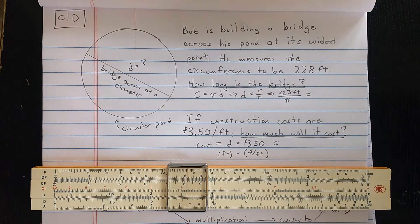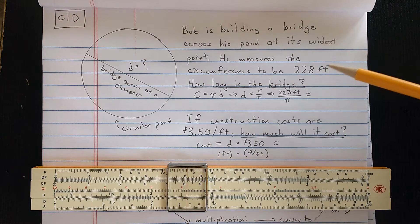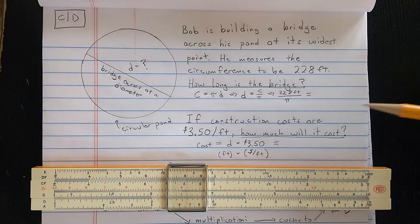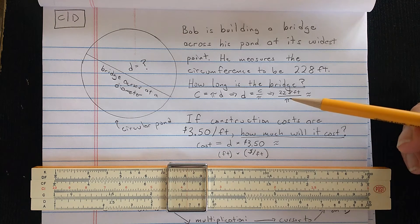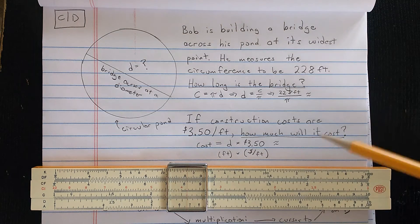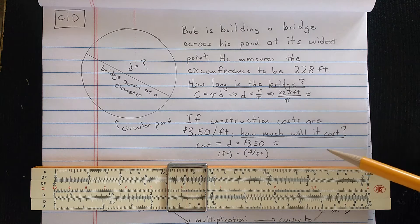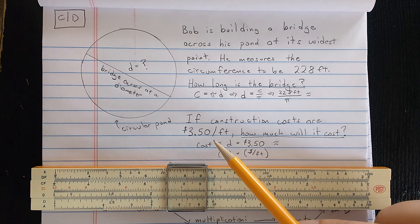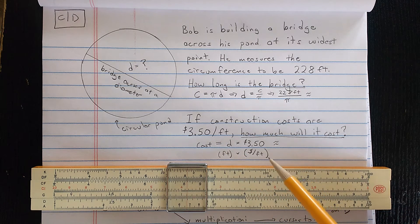Bob is building a bridge across his pond at its widest point. He measures the circumference to be 228 feet. How long is the bridge? That's the first part of the question. Second part: If construction costs are $3.50 per foot, how much will it cost?